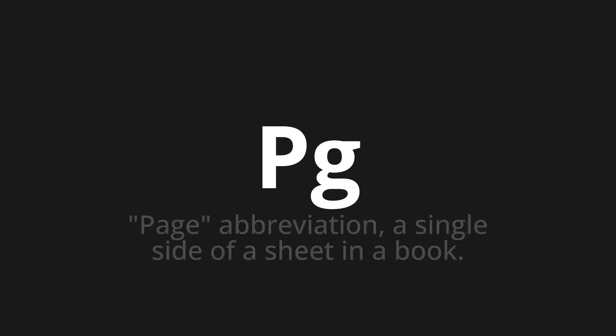P-G. Which means? Page. Abbreviation. A single side of a sheet in a book.